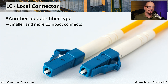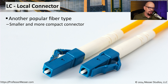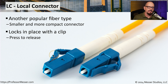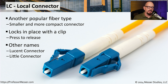Another common fiber connector is the LC, or local connector. This is slightly smaller than an SC connector, and it has a clip on the top to lock it in place once you put it into the interface. This means it won't accidentally get pulled out, and to remove it, you need to push down on the clip. That will release the lock and allow you to easily remove it from the interface. Instead of local connector, you might also see this referred to as a lucent connector or a little connector.